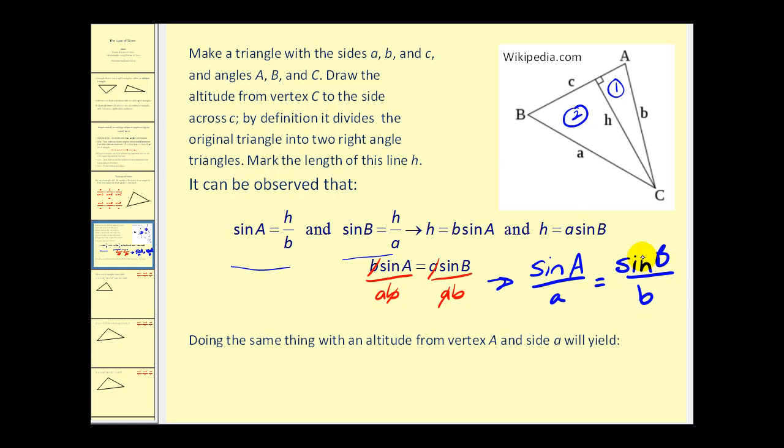So we're left with the sine of angle A divided by the length of side A must equal the sine of angle B divided by the length of B. To get the third ratio stated in the law of sines, we could construct an altitude from vertex A and show this is also equal to sine of angle C divided by the length of side C. Okay, let's go ahead and take a look at a problem.